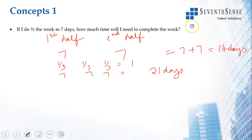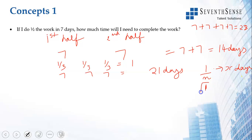If I do one fourth of the work in 7 days, I will take 7 plus 7 plus 7 plus 7, which is 28 days. Simply put: if I do 1 by n of the work in x days, I finish the full work in nx days. So if 1/n is 1/2, days = 2×7; if 1/n is 1/3, days = 3×7, and so on.